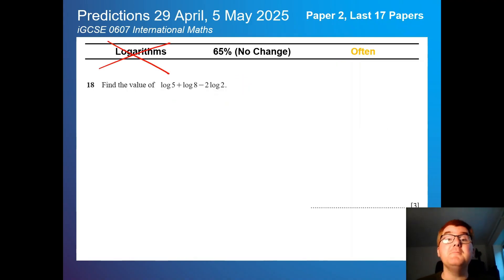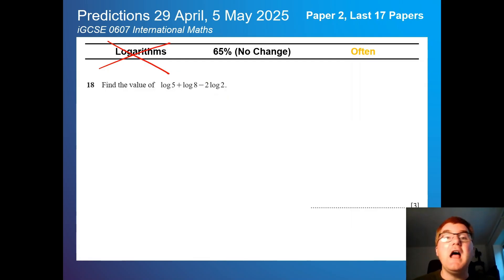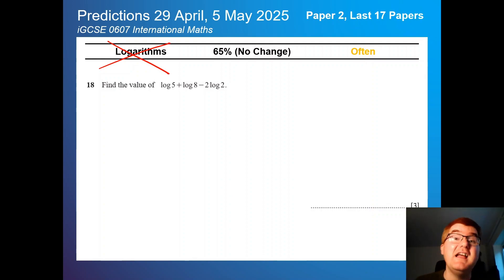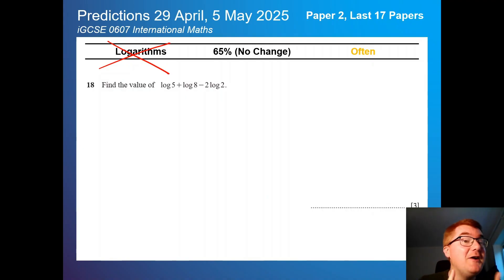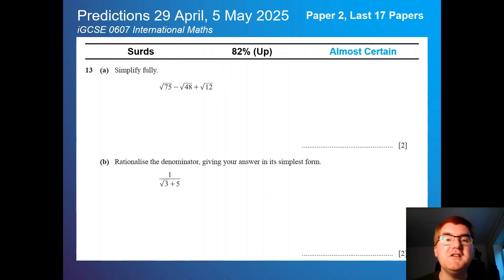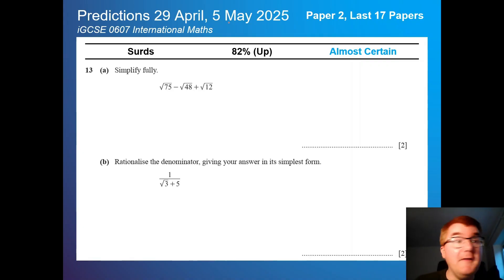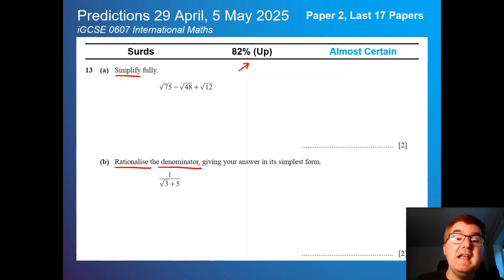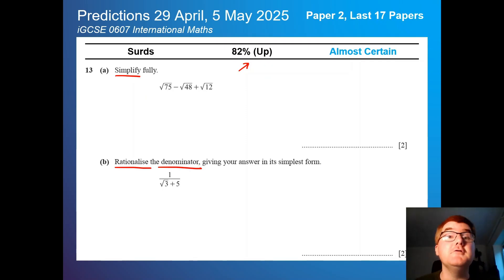Logarithms — I've put a big cross through it because it's been taken off the syllabus. I'll go through everything at the end of this video so you know exactly what's on and what's been removed. Surds, on the other hand, have always been a popular topic on 0607 and now on 0580 as well, up at 82%. A typical question involves simplifying and then rationalizing the denominator. Check out the linked video if you need help with those.